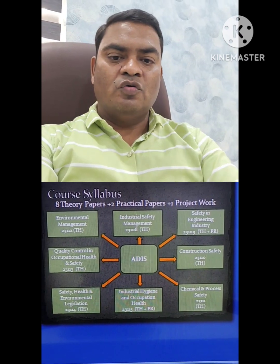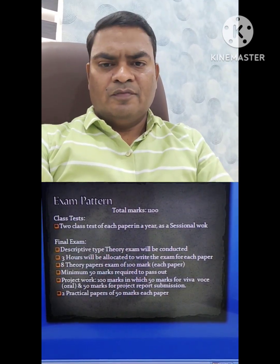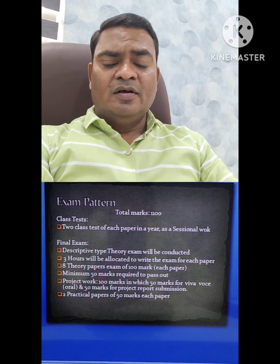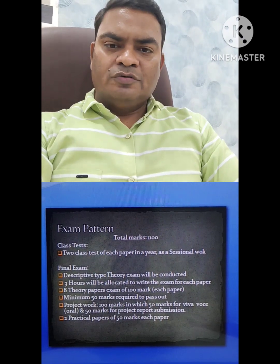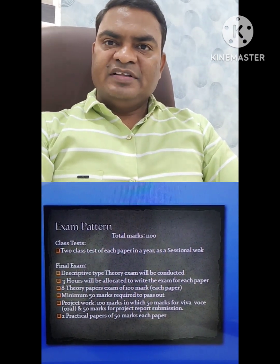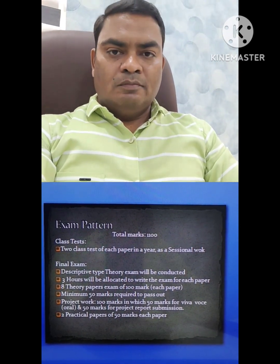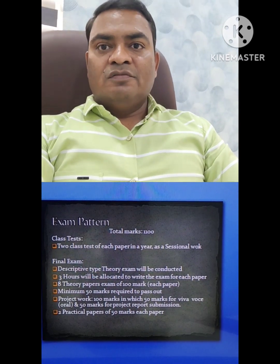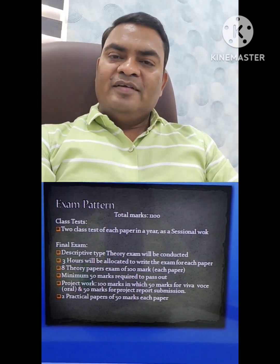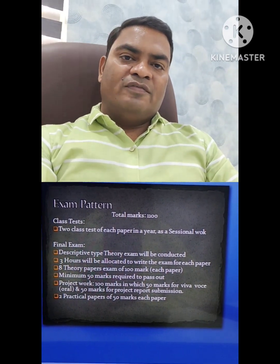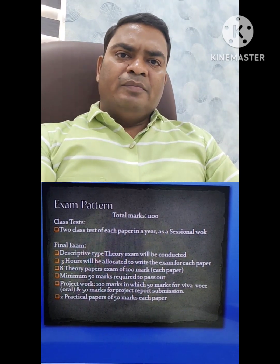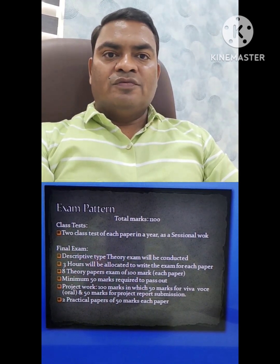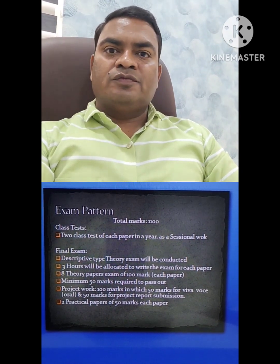Regarding the exam pattern, the ADIS course has a total of 1100 marks. There are two cluster assignments throughout the year which everyone must attend and submit, and these carry final marks. The final examination covers all theory papers in a descriptive format, with three hours assigned for each paper. Each of the eight theory papers is worth 100 marks, with a minimum of 50 marks required to pass. Project work is 100 marks total — 50 marks for the oral and 50 marks for project report submission.